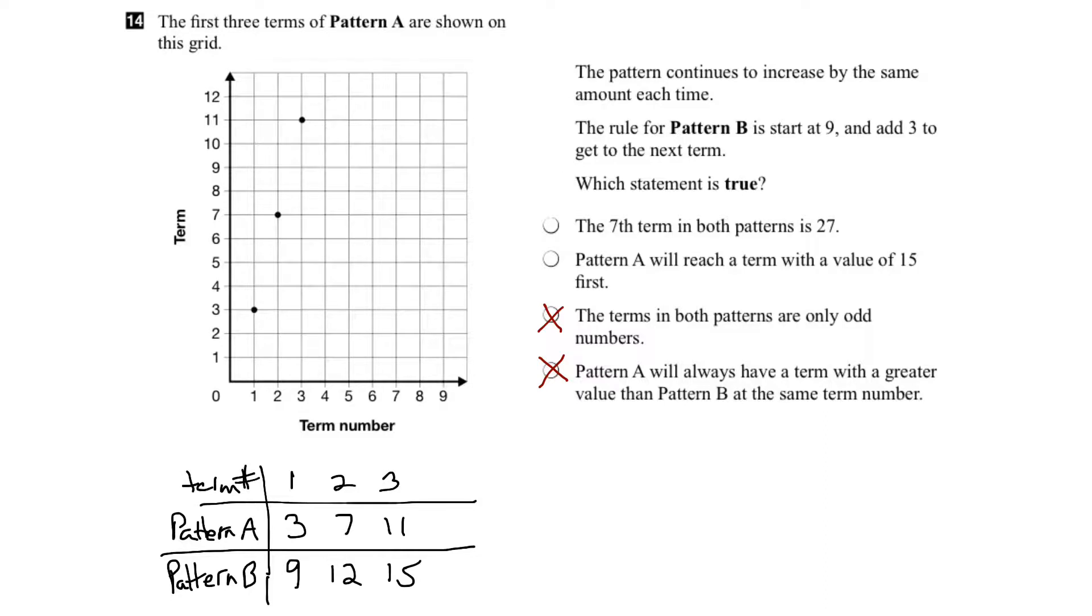The next statement: Pattern A will reach a term with a value of 15 first. Let's look at Pattern A: starts at 3, up to 7, then to 11. Pattern B: 9 to 12 to 15. Well, Pattern B reaches the number 15 first, so we can eliminate that statement.